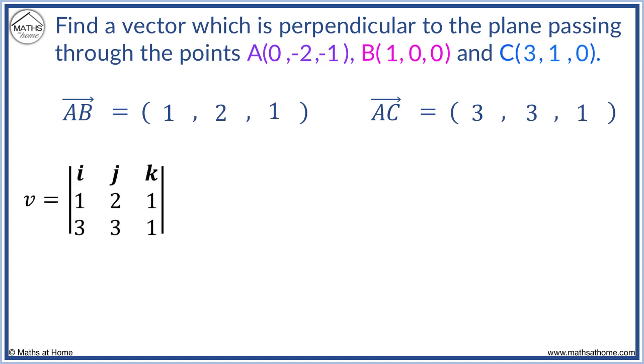We arrange like so to find the cross product. In the i component, we obtain 2, 1, 3, 1.